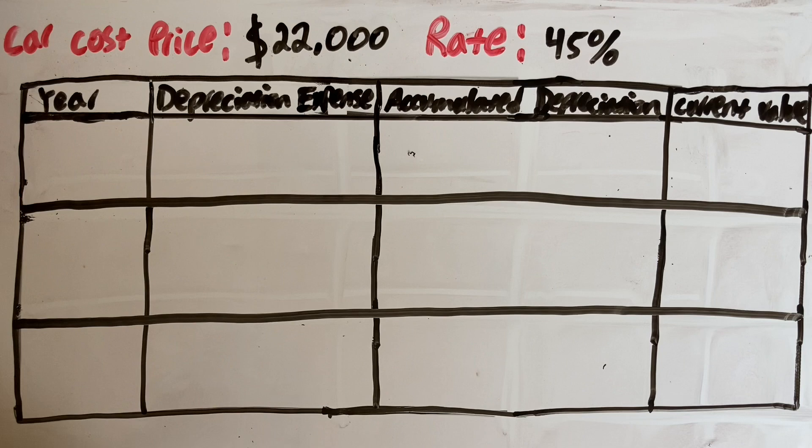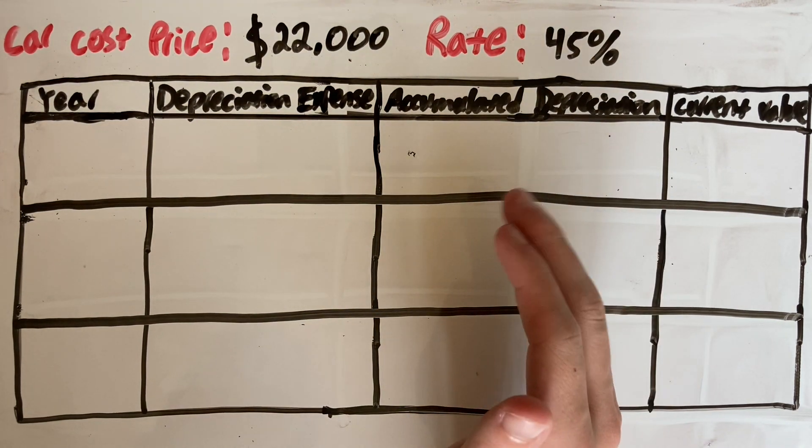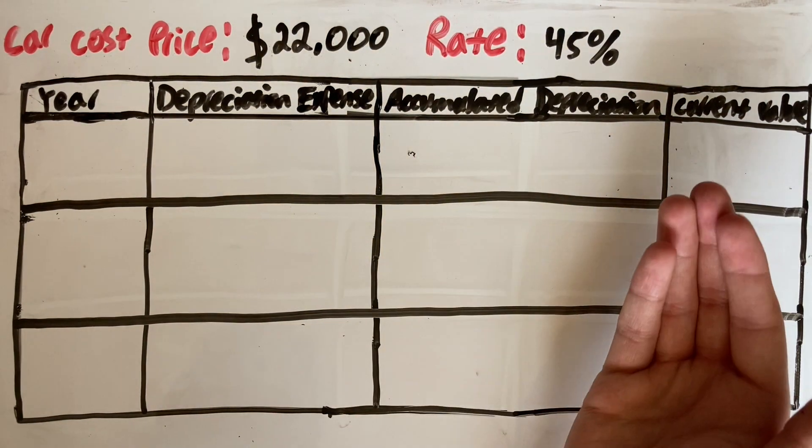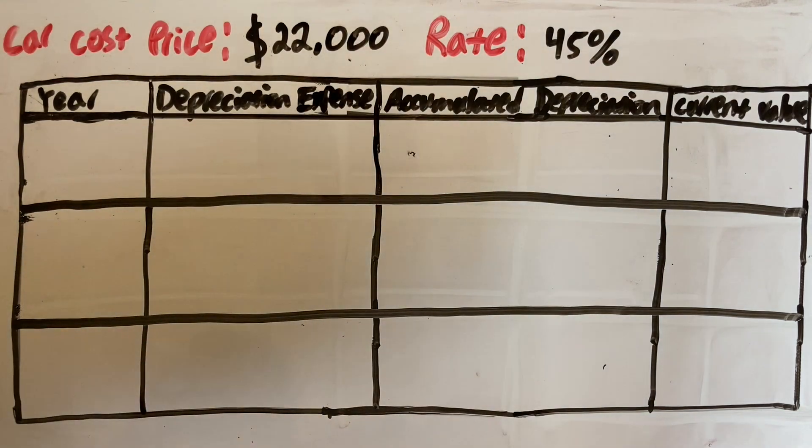So what type of assets lose more value in the early years than the later years? Well, any asset that has any type of machinery. For example, in this example we're using a car. When you buy a car it's going to lose the majority of its value or have the majority of its depreciation expense occurring in the first few years you own it, and the longer you own it it's still going to be losing value but it won't be losing as much value each year you own it.